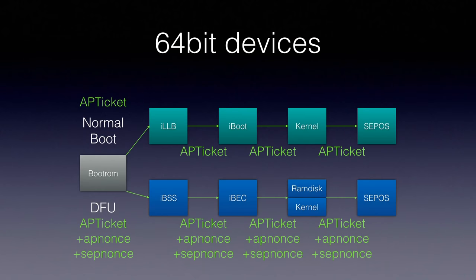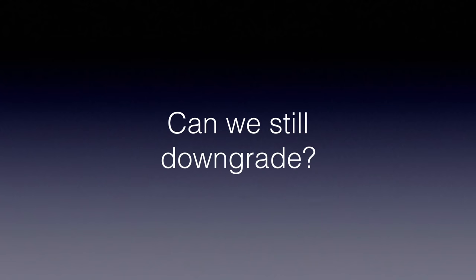This is how the boot chain looks on 64-bit devices. On normal boot, the AP ticket replaces what was previously SHSH. On the DFU route, not only does the boot ROM check the AP ticket and generate an AP nonce — you also need to request the SEP nonce and put it inside your ticket. So we've seen this has all improved significantly.